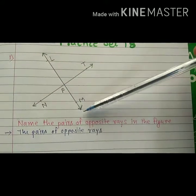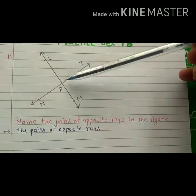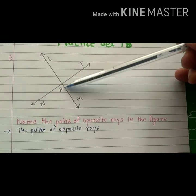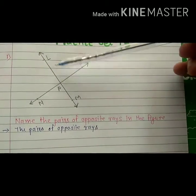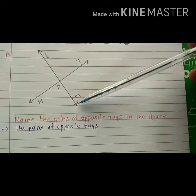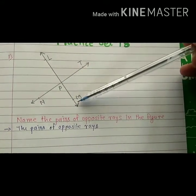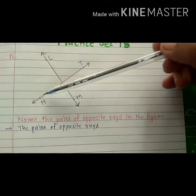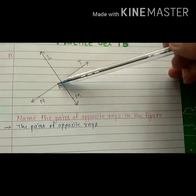So see here, ray PL and ray PM have a common origin at point P. Point P is the common origin of ray PL and ray PM, and they make a straight line. Next, see here, ray PM and ray PT also have a common origin at point P.